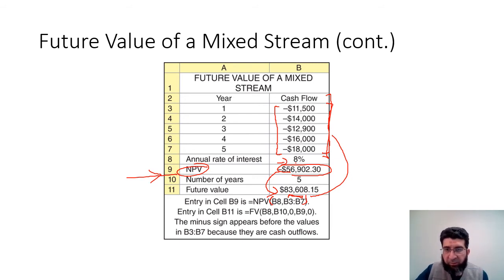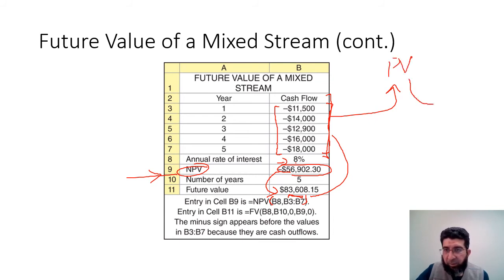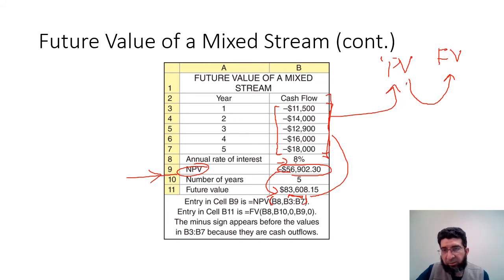The approach works like this: we take all the cash flows and calculate the present value, then take that single present value forward to the future value. All the cash flows are first brought to present value, and then that single present value is compounded back to the future value.